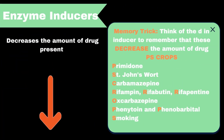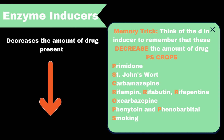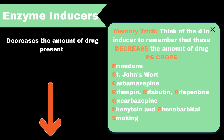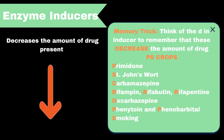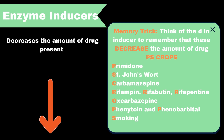Starting off with enzyme inducers. This list of drugs decreases the amount of drug present when given with another drug. Just remember the D in inducer stands for these drugs decreasing the amount of drug concentration.